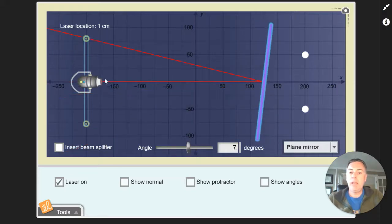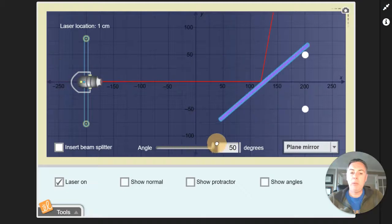So you can see if we change the angle, we have our incidence ray and we have our reflected ray over here. You can make it any of the angles all the way to 50 degrees.